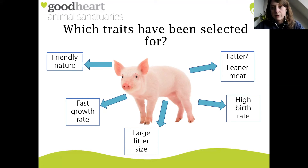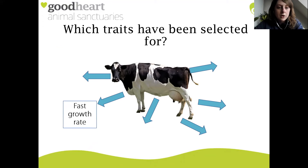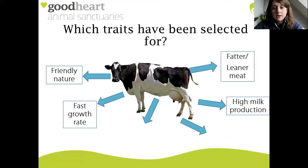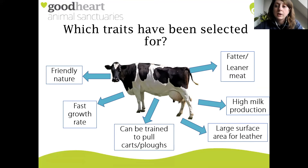Pigs are renowned for having incredibly large litter sizes - a mother pig could have 12 or 13 piglets per litter, which increases the yield. Now let's take a look at a dairy cow - a Friesian Holstein. Again they've got a very fast growth rate and friendly nature. You can select for fatter or leaner cuts of meat as desired. These have very high milk production, as you can see from the enlarged udders. There's also a very large surface area for the production of leather, and these animals can be trained to pull carts or ploughs, which was an important progression for agriculture.